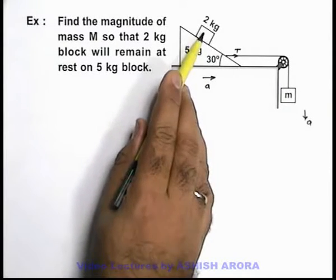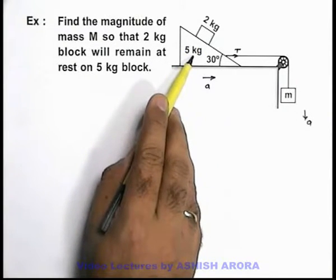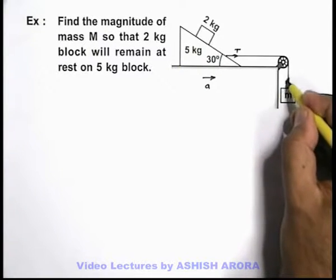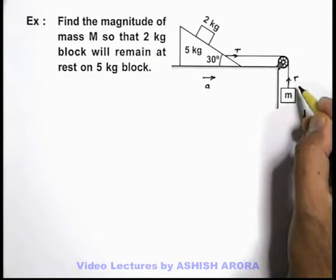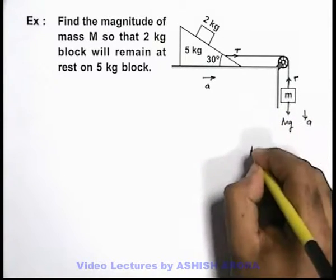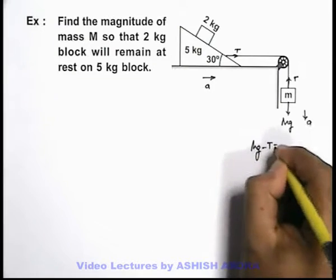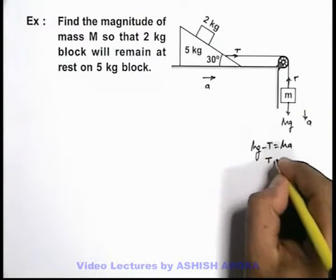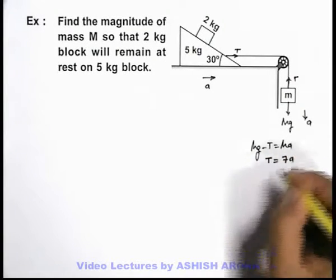Because 2 kilograms is given to be at rest on this 5 kilograms, here also we can say if tension in the string is T, we can simply write the equation of motion of this block as: mg - T = may. And for this system we can write the direct equation as T = 7ay.